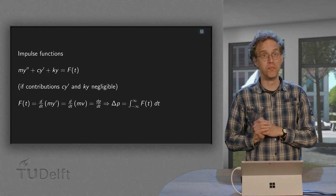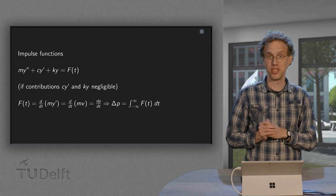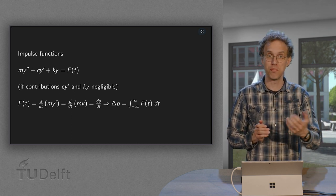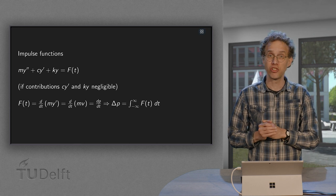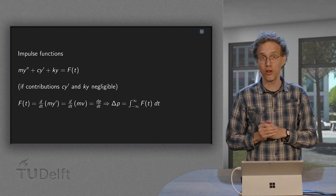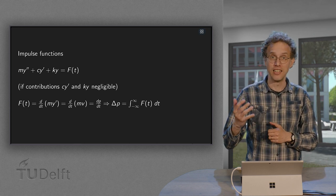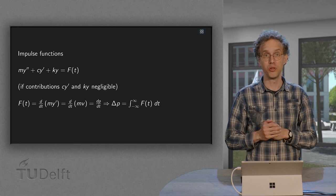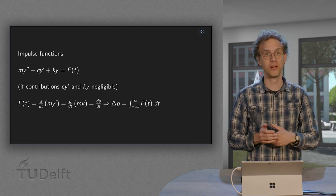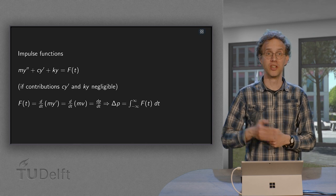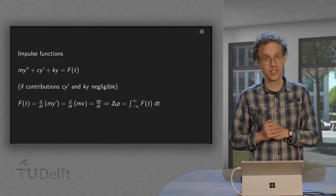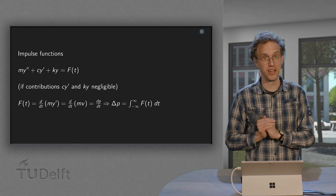With these pushes you basically add momentum to the system. You add a certain impulse. This actually happens in quite a lot of systems, and these impulses can be modeled using a so-called delta function. What is this delta function and what are its properties? That is what you will learn in this video.